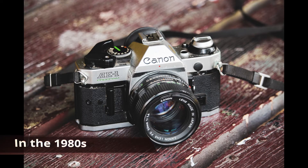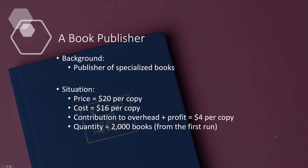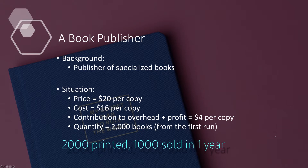In the 1980s, a publisher of specialized books faced the following situation. The book sells for $20 per copy, and the cost was $16 per copy. The contribution to the overhead and the profit is therefore $4 per copy. On the first run, the publisher prints 2,000 books. Only half of these books were sold after one year, so there were 1,000 books left.